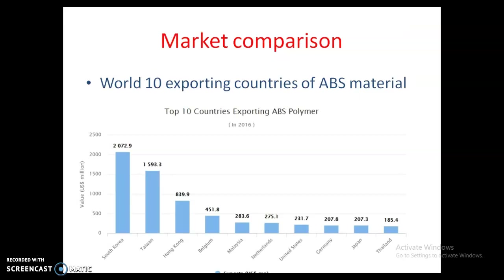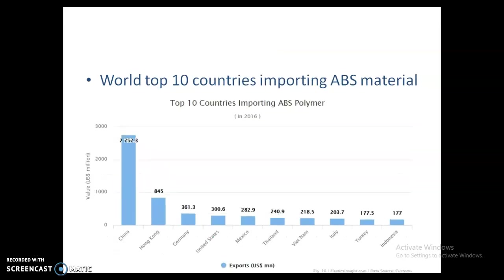Now, the market information. These are the world's top 10 exporting countries of ABS material: South Korea, Taiwan, Hong Kong, Belgium, Malaysia, Netherlands, United States, Germany, Japan, and Thailand. South Korea exports the largest number of ABS material to other countries — around 207 countries are importing ABS materials. The top importing countries are China, Hong Kong, Germany, United States, Mexico, Thailand, Vietnam, Italy, Turkey, and Indonesia. China imports the largest number of ABS materials. The US price is 2757.3 US dollars as compared to other countries.